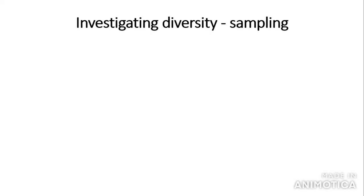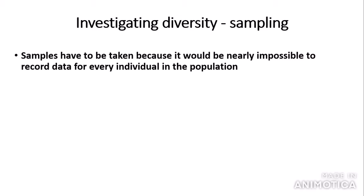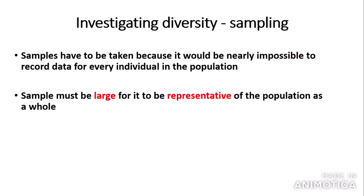So how do we investigate diversity, especially amongst plants? We do this through a process called sampling. Sampling is necessary because it would be nearly impossible to record data for every individual in the population — if you had a field of daisies, for example, it would be almost impossible and very time-consuming to count every single daisy. These samples must be large to be representative of the population as a whole, and sampling must also be random to avoid bias. For random sampling, you can use a random number generator to generate coordinates, for example.